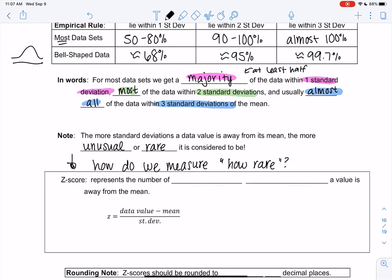How do we measure how rare? So that's called the z-score. The z-score is going to be something we are going to use a lot, so this is something—put a star or something. We're going to—this is going to come up basically for the remainder of the semester, it's not going away. So the z-score represents the number of standard deviations a value is away from the mean. And here's the formula in words: we're going to do the data value minus the mean divided by the standard deviation.